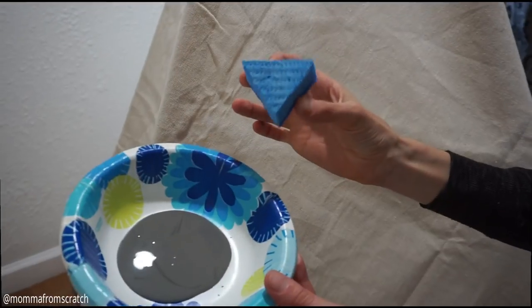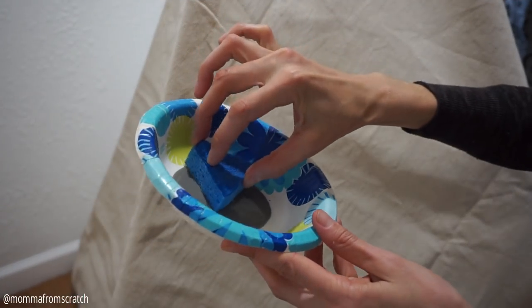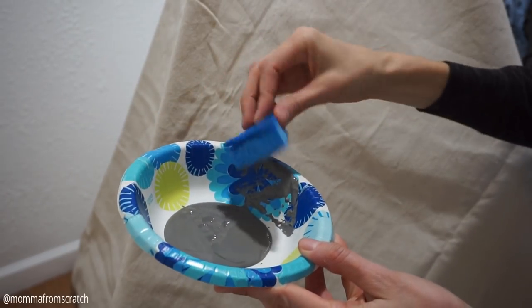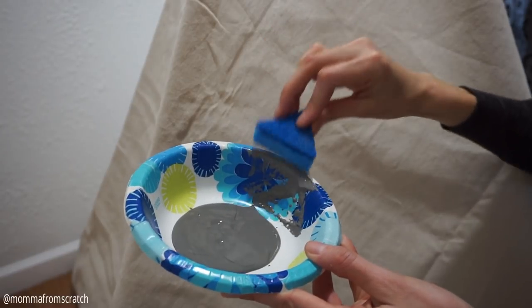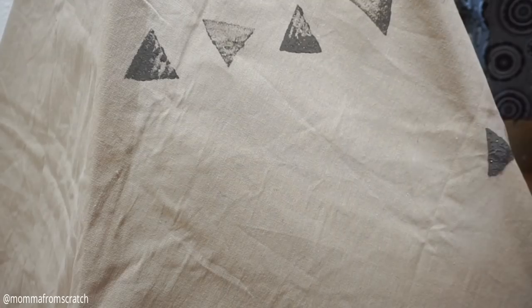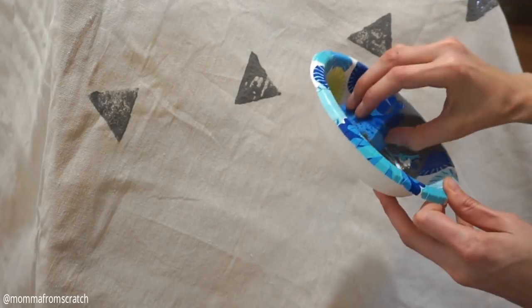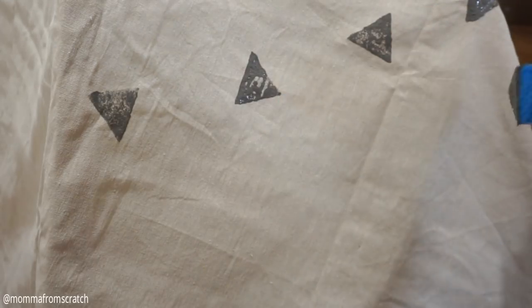The next step is to decorate the canvas. This is optional again, but my boys really wanted it to be decorated. So I made triangle shapes out of a regular dish sponge, and I just dipped my paint in it and wiped off the excess.